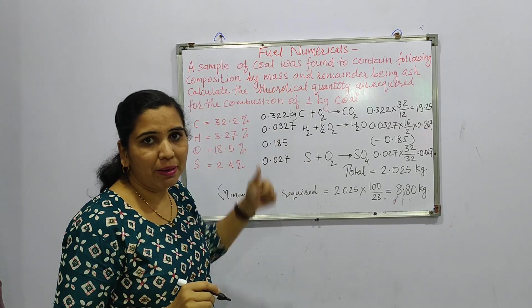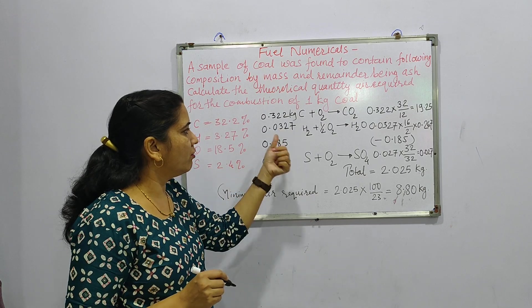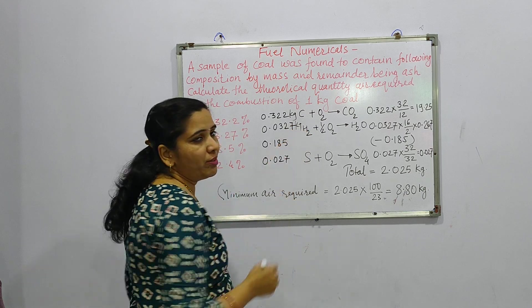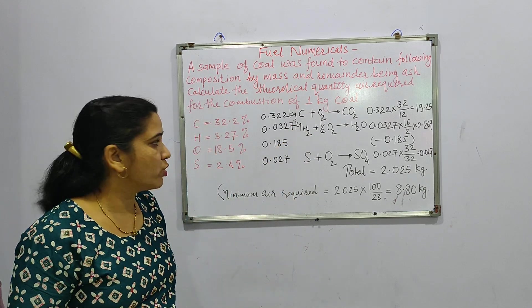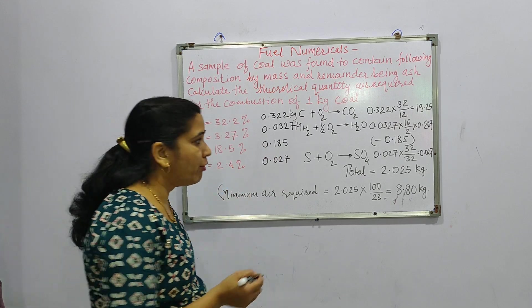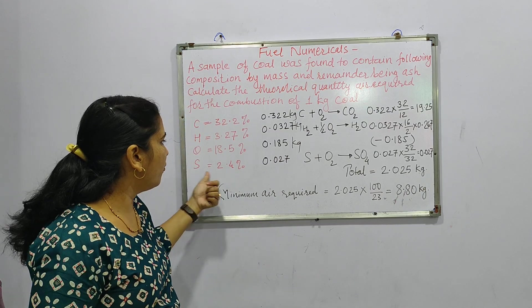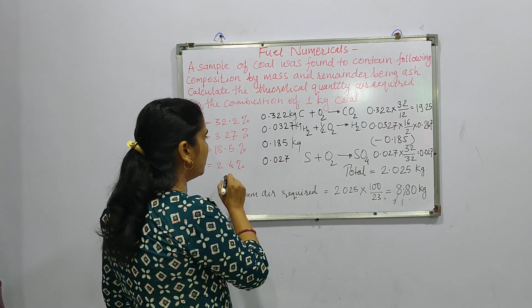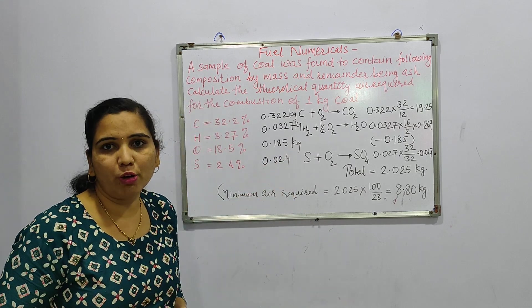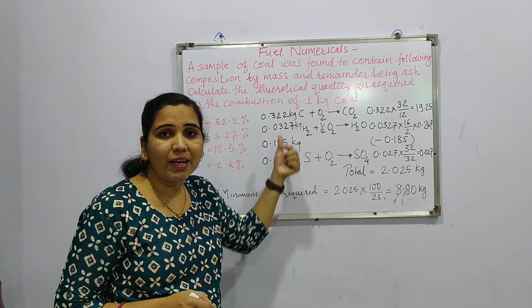So carbon is 0.322 kg. Hydrogen, when converted, is 0.0327 kg. Oxygen is 0.0247 kg, and sulfur is 0.024 percent, which is also converted to kilograms.